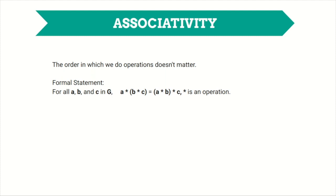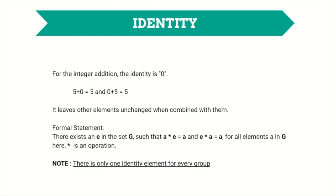Number three: existence of identity element. If we use the operation on any element and the identity, we will get that element back. For integers with addition, the identity is zero, because five plus zero equals five and zero plus five equals five. In other words, it leaves other elements unchanged when combined with them. There is only one identity element for every group. Formal statement: there exists an element e in the set G such that a operation e equals a and e operation a equals a for all elements a in set G.